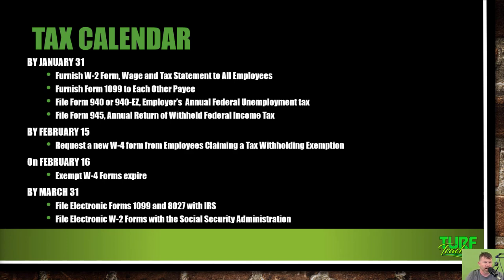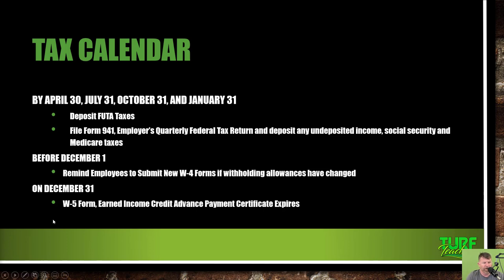Tax calendar highlights: By January 31st — furnish W-2 forms to all employees, furnish 1099 forms to each payee, file Form 940/940-EZ (employer's annual federal unemployment tax), file Form 945 (annual return of withholding federal income tax). By February 15th — request new W-4 from employees claiming withholding exemption. By March 31st — file electronic Forms 1099 and W-2 with the IRS and Social Security Administration. By April 30th, July 31st, October 31st, and January 31st — deposit FUTA taxes and file Form 941 (Employer's Quarterly Federal Tax Return).